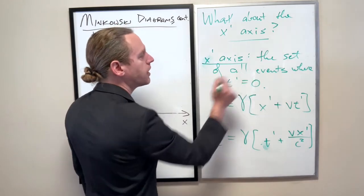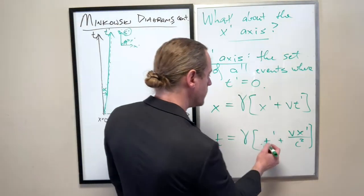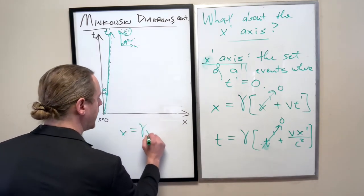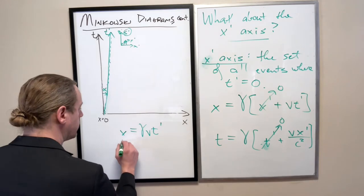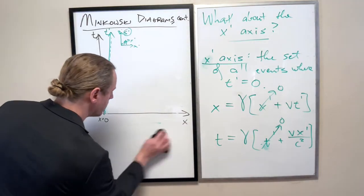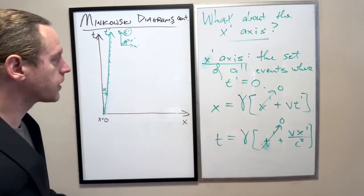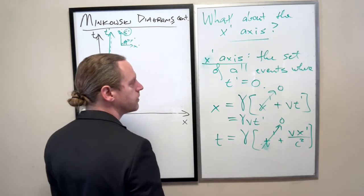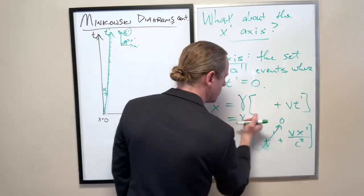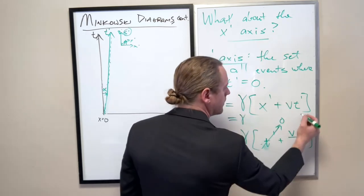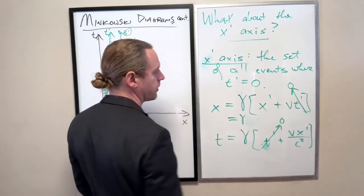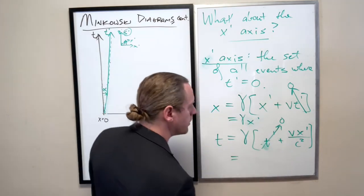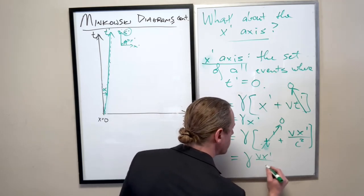If we plug in t-prime equal to zero at all points, those terms drop out. Wait, this term is zero - the t-primes are zero there. So very clearly, x equals gamma x-prime, and t equals gamma vx-prime over c-squared.